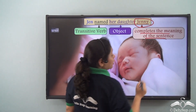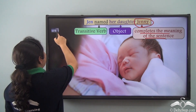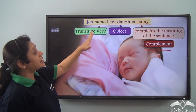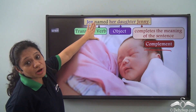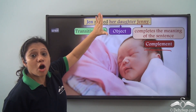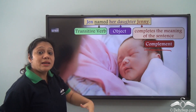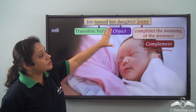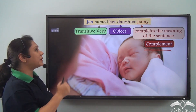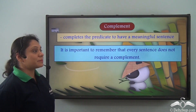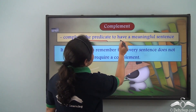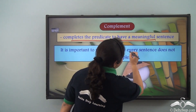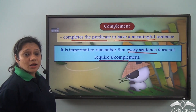...we have added the word 'Jenny' in the predicate, and this word completes the meaning of the sentence because it is completing the predicate — hence 'Jenny' is the complement. So complements complete the predicate to have a meaningful sentence. It is important to remember that every sentence does not require a complement.